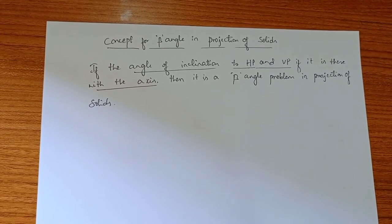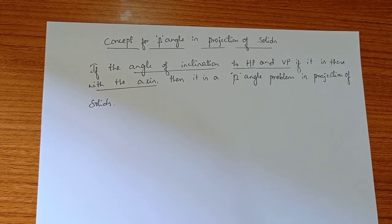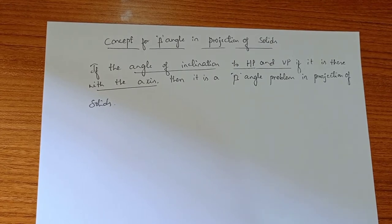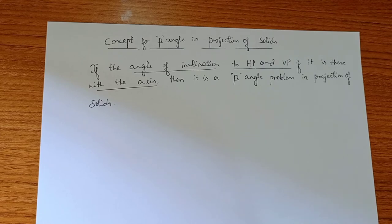The concept of beta angle in projection of solids: if the angle of inclination to both the HP and VP is given with the axis, then it is a beta angle problem in projection of solids.